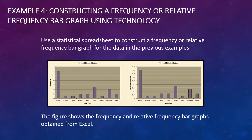Example 4: Constructing a frequency or relative frequency bar graph using technology. Use a statistical spreadsheet to construct a frequency or relative frequency bar graph for the data in Example 1. We can see the frequency distribution chart on the left and a relative frequency or percentage of responses on the right. These were drawn using Excel — probably one of the most common tools in business. You just enter the data in the spreadsheet, then highlight and copy the data and ask Excel to build you a graph in multiple forms.